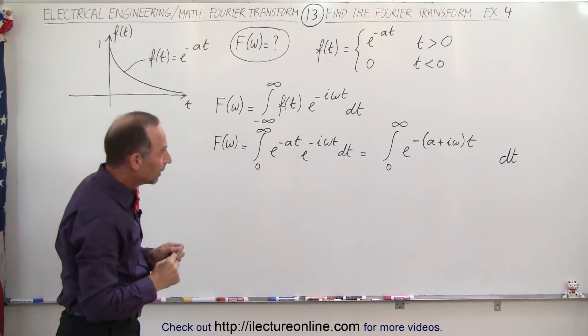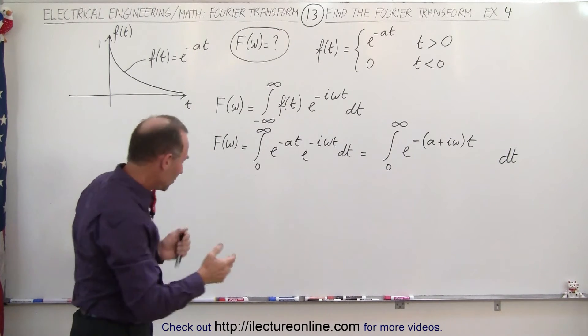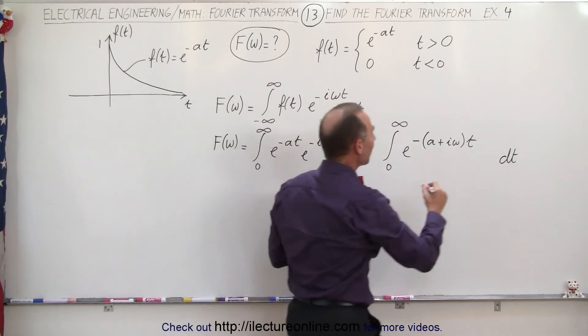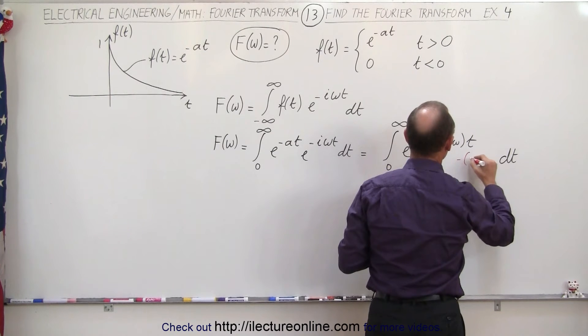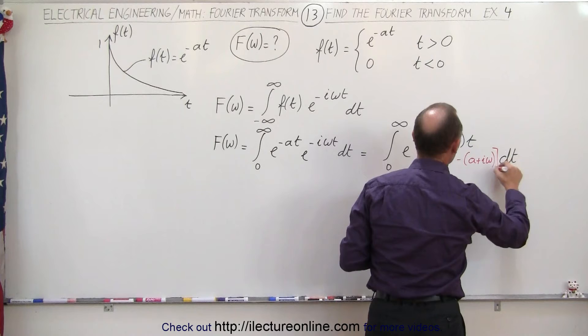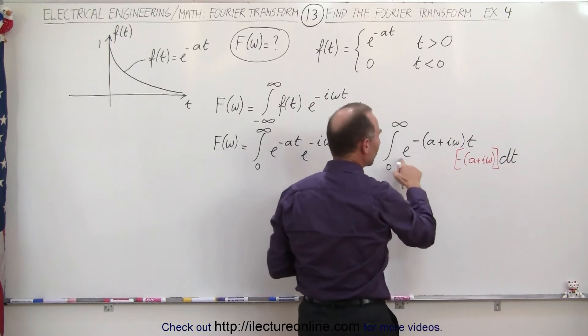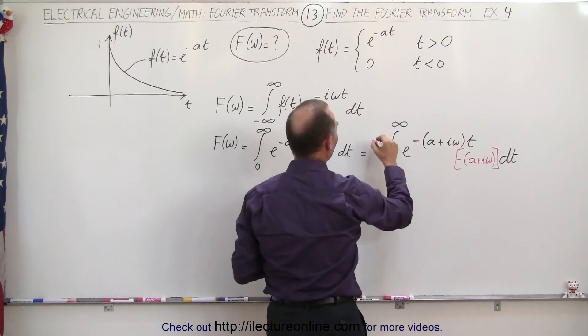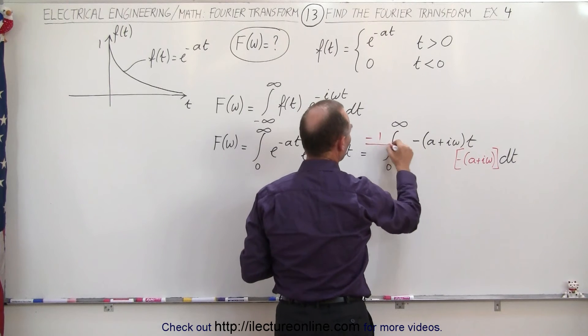So now we're looking for the proper differential, which means we're going to need a minus a plus i omega. Let me put a little bracket around it. So if we're going to multiply this times this, we also have to divide, so minus 1 over a plus i omega.